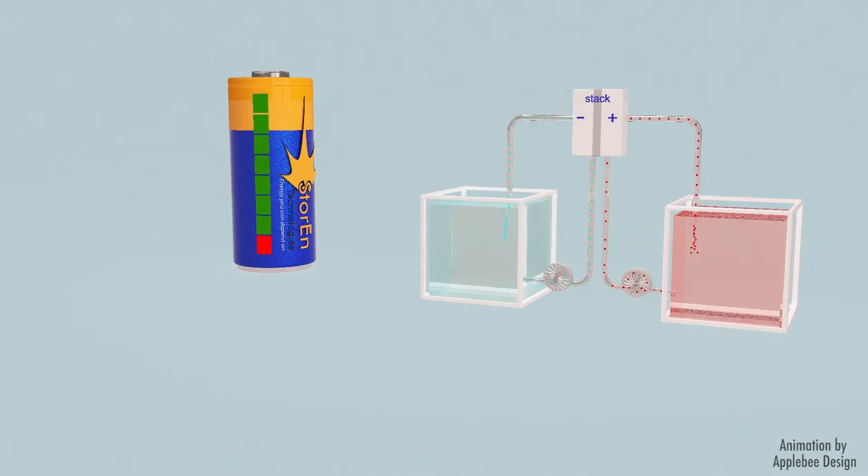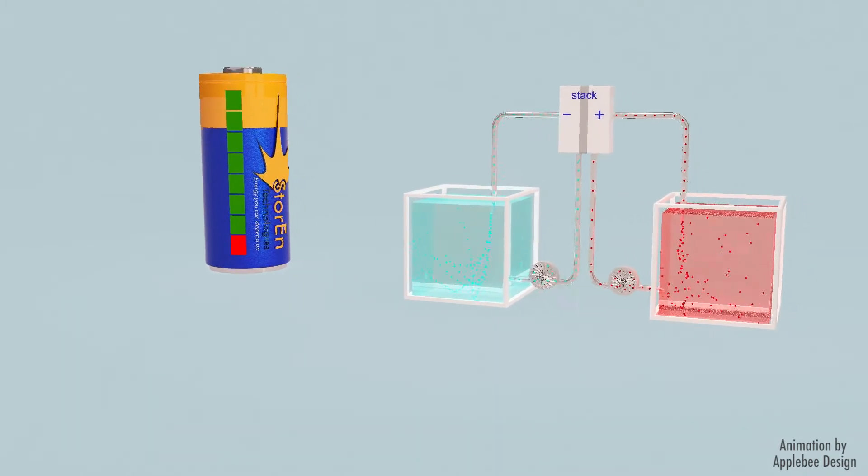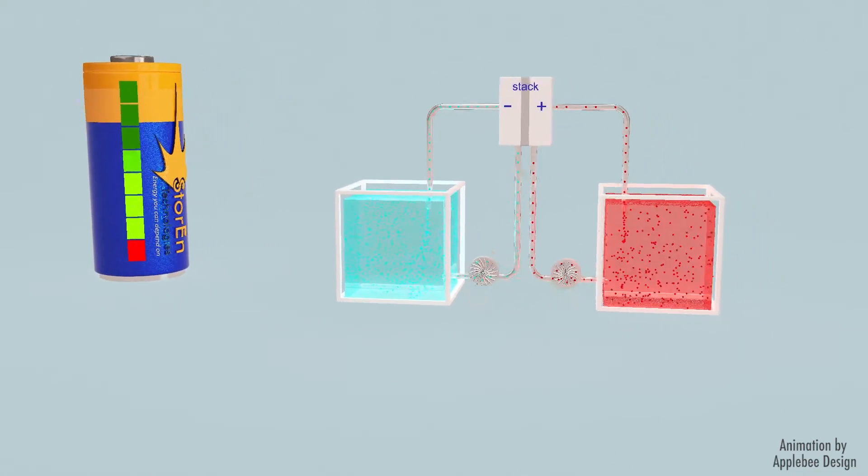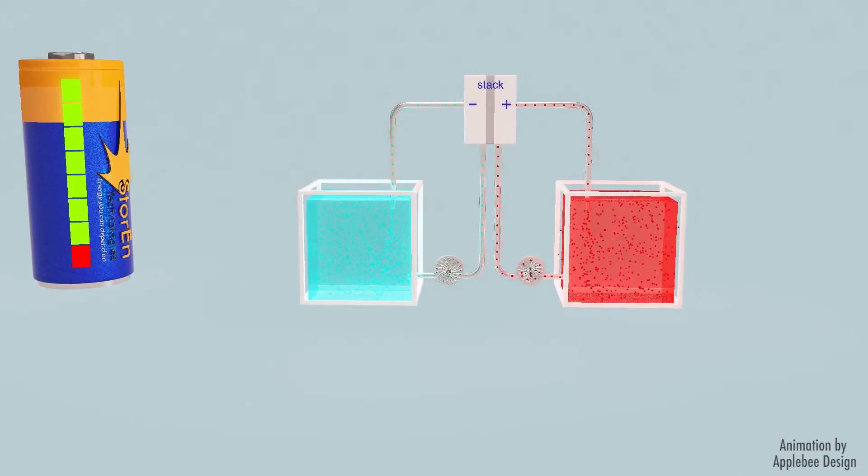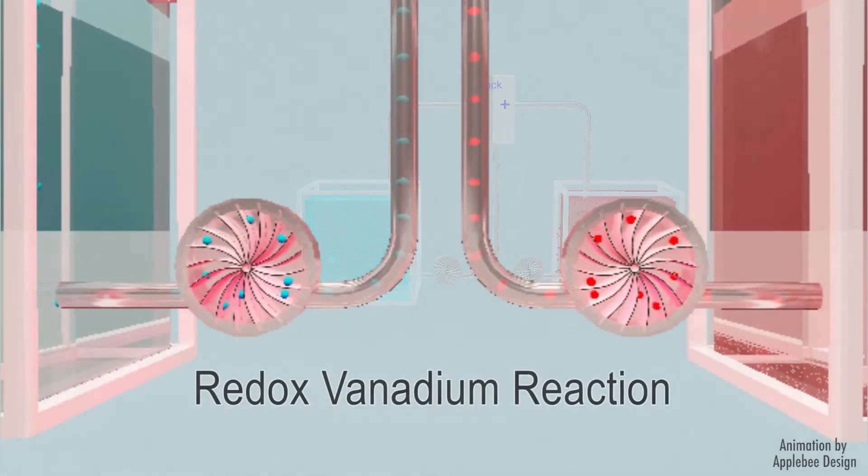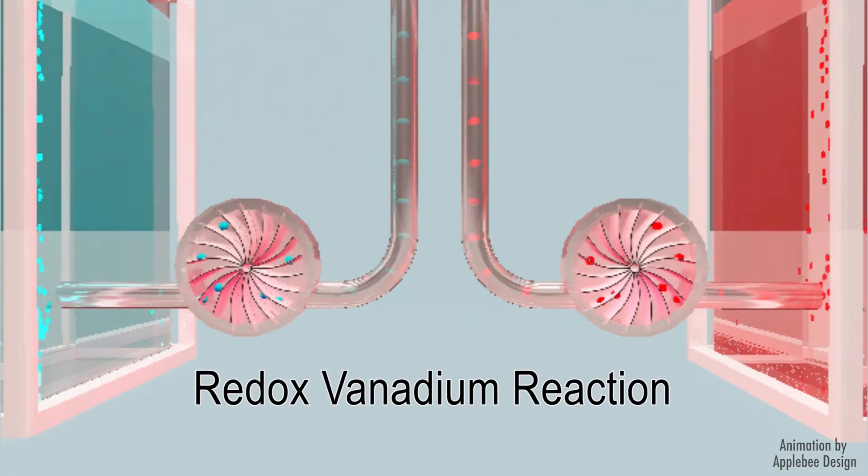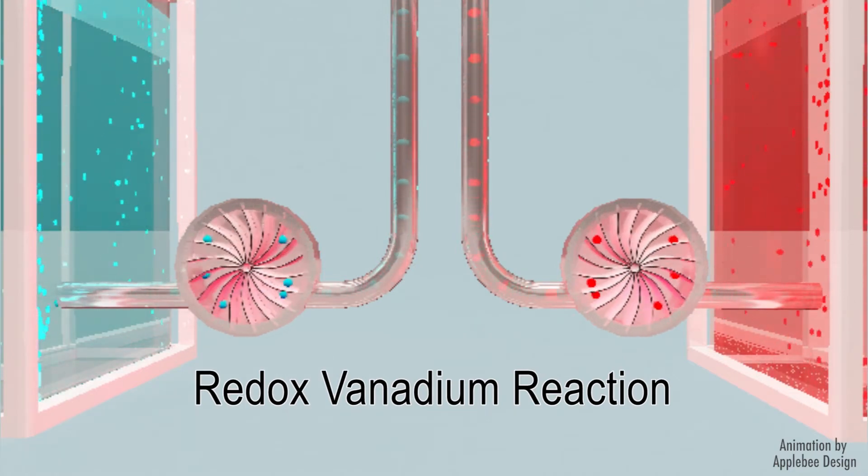In a vanadium flow battery we find two tanks of electrolyte solution, one positive and one negative, with a charging-discharging cell stack between them. Two pumps make the negative electrolytes and the positive electrolytes flow through the cell stack, where a thin proton exchange membrane prevents the two electrolyte solutions from mixing together.